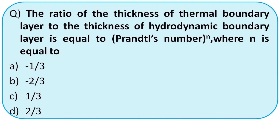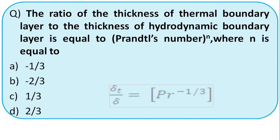The ratio of thermal boundary layer thickness to hydrodynamic boundary layer thickness equals Prandtl number to the power n, where n equals — recall the formula. The right option is option A.